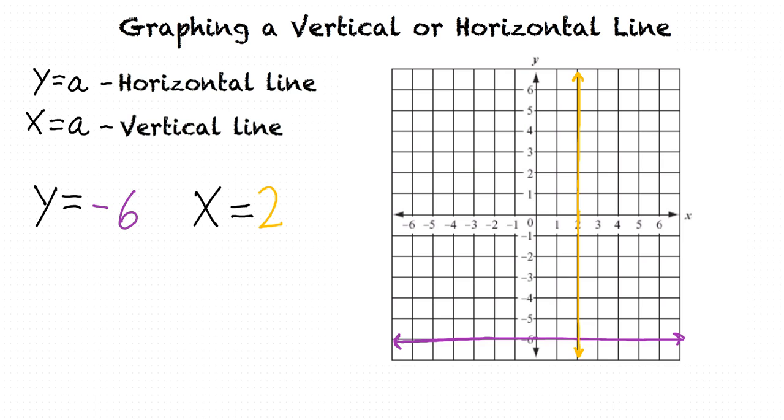So if we have an equation where y equals a constant, like y equals 4, it will have a horizontal line as a graph. And if we have an equation where x equals a constant, like x equals 5, it will have a vertical line as a graph.